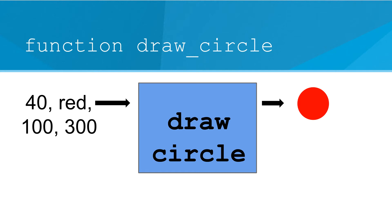Now let's look at this in a different way. The blue box represents the draw circle function. We give it an input. We give it parameters. We give it arguments on the left, and we get our proper red circle.